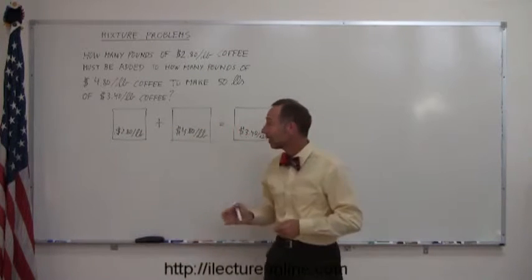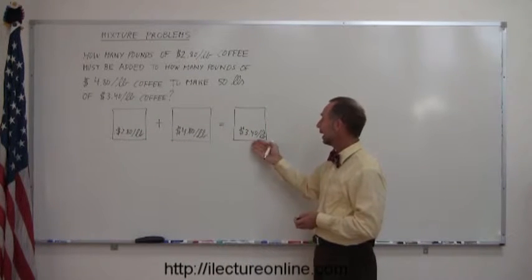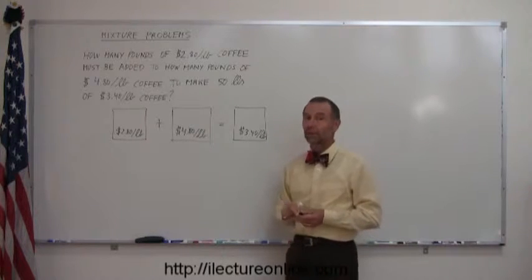So the first thing you do is write down the cost per pound of each type of coffee, and the cost per pound of the coffee you're going to end up with.